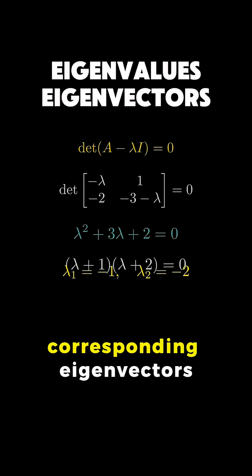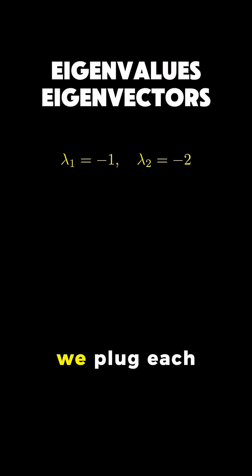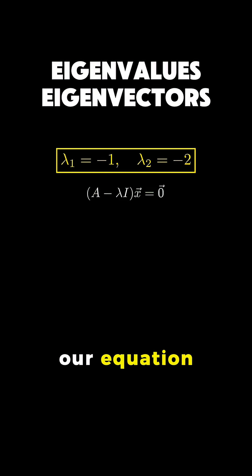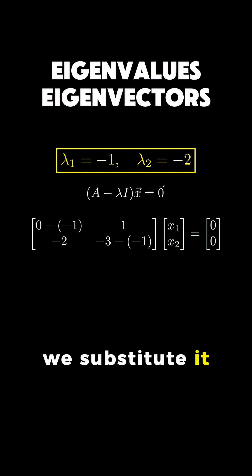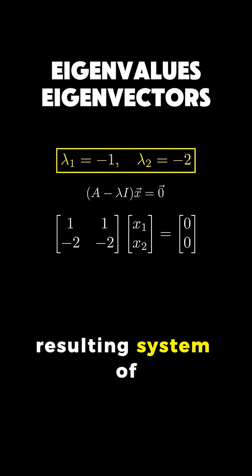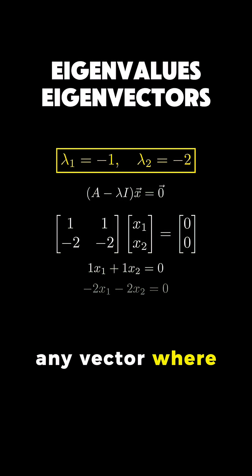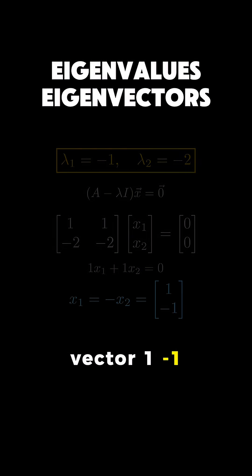To find the corresponding eigenvectors, we plug each eigenvalue back into our equation. For lambda equals negative 1, we substitute it back and solve the resulting system of linear equations. We find that any vector where the first component is the negative of the second component works, for example, the vector 1, negative 1.